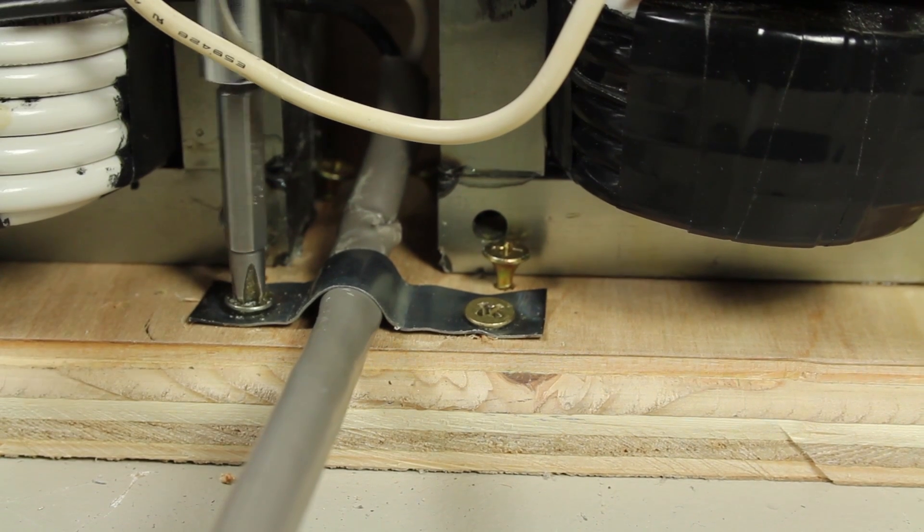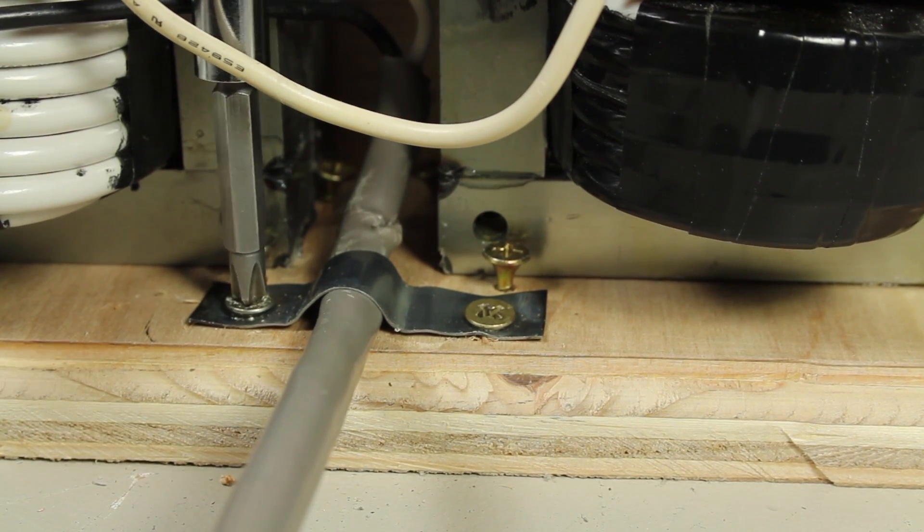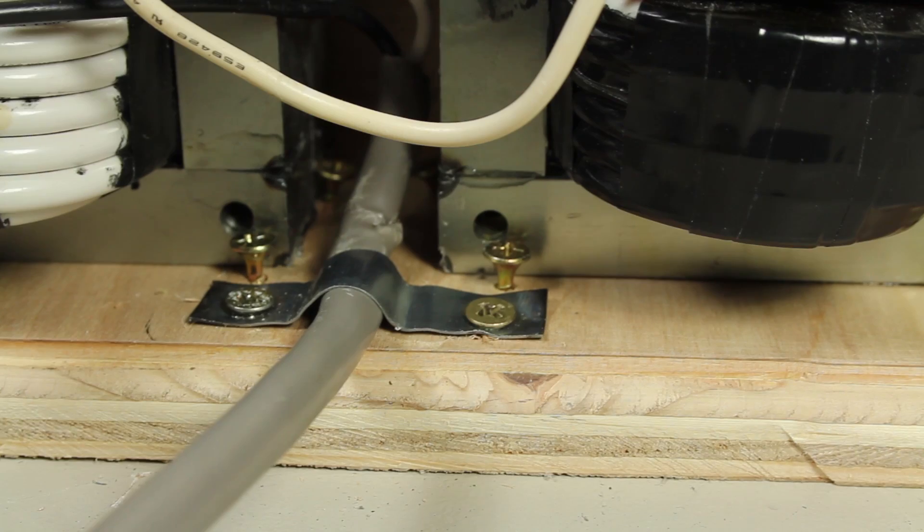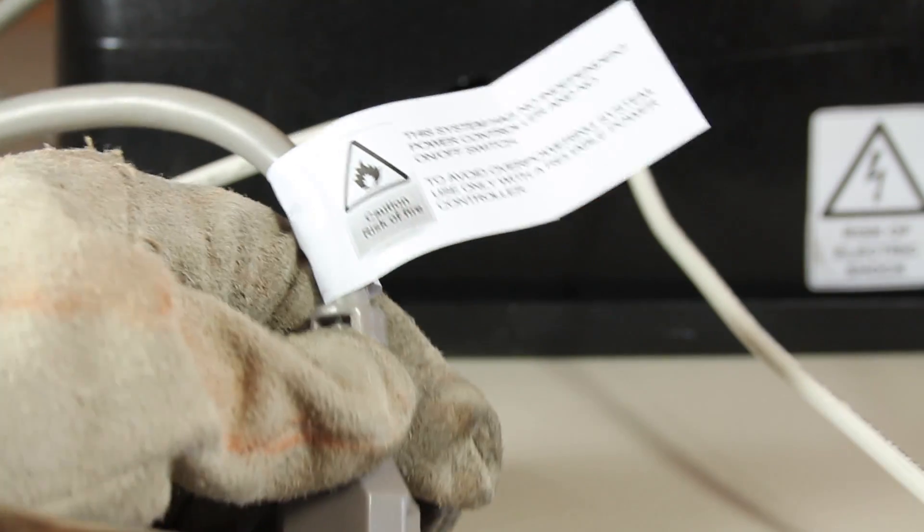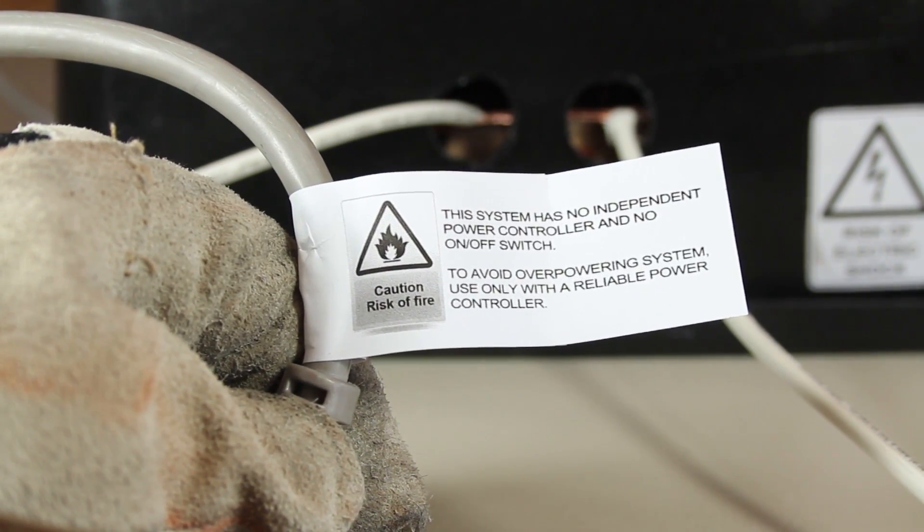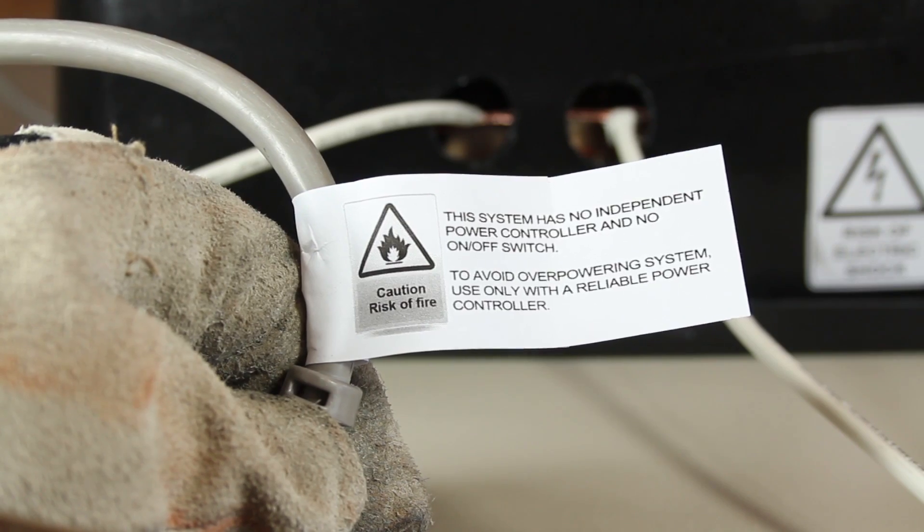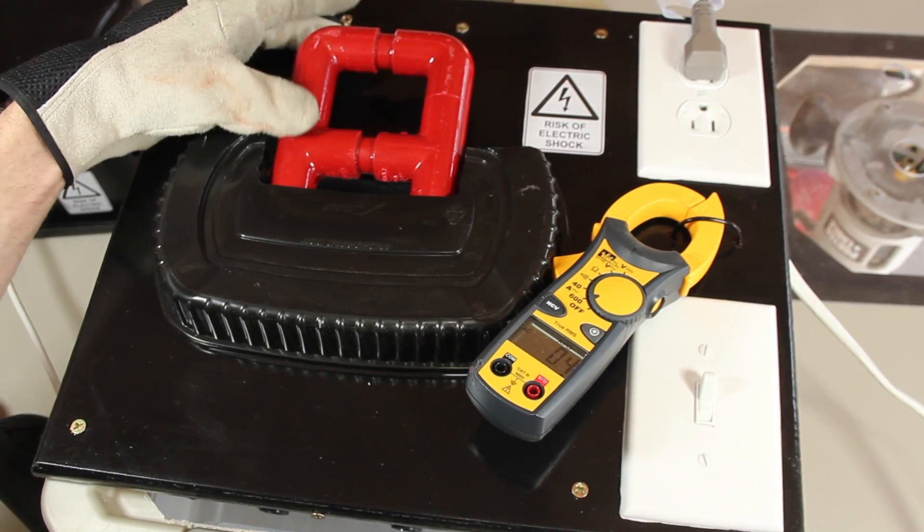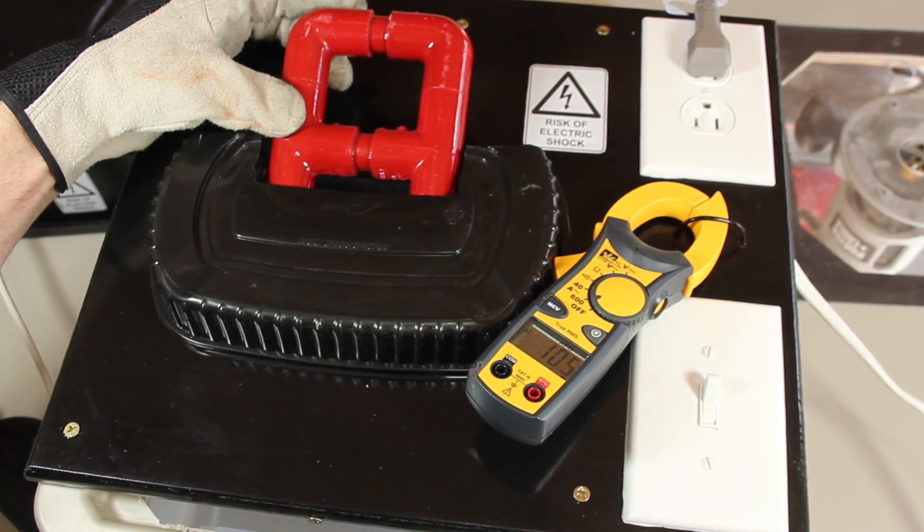Okay, to finish up, let's fasten the power cable to the base, so it doesn't pull the connections apart if the cable gets jerked around. It's extremely important to remember this system has no on or off switch, and can only be used with a power controller like the Scariac. You can see how to build this one in another video.